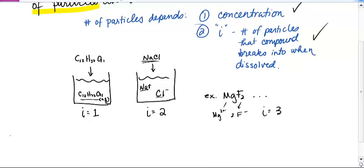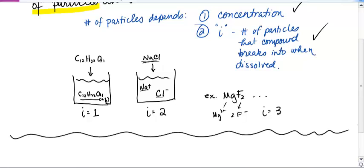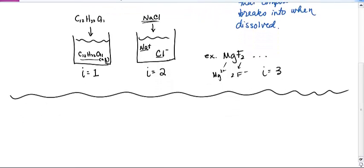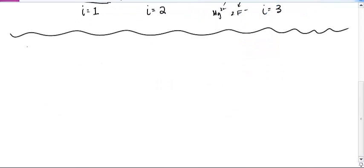There are three separate properties that we're going to look at that deal with colligative properties. The first one is super important: vapor pressure lowering.